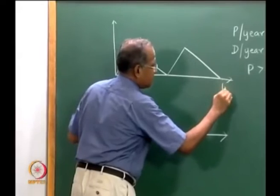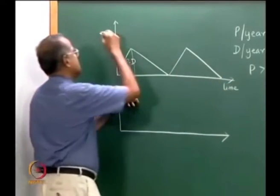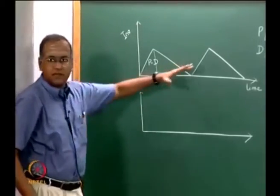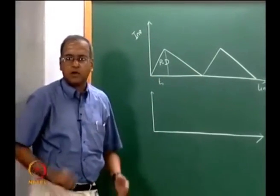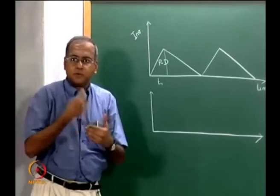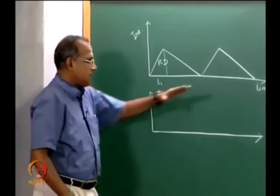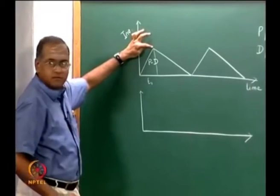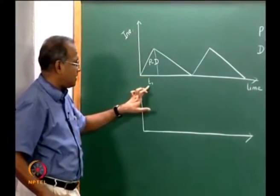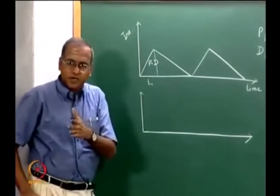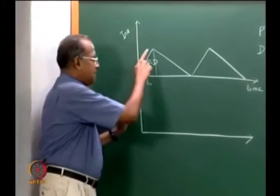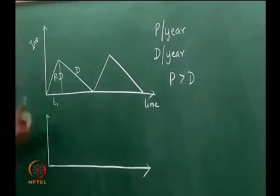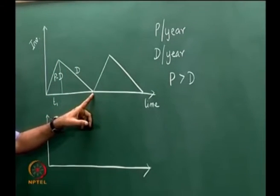This is time, this is inventory, but this graph is for the item and not for the facility that is producing the item. So as far as the item is concerned, inventory is built up at the rate of p minus d for a period t1. Production stops and then this inventory is consumed at the rate of d till the inventory position reaches 0.